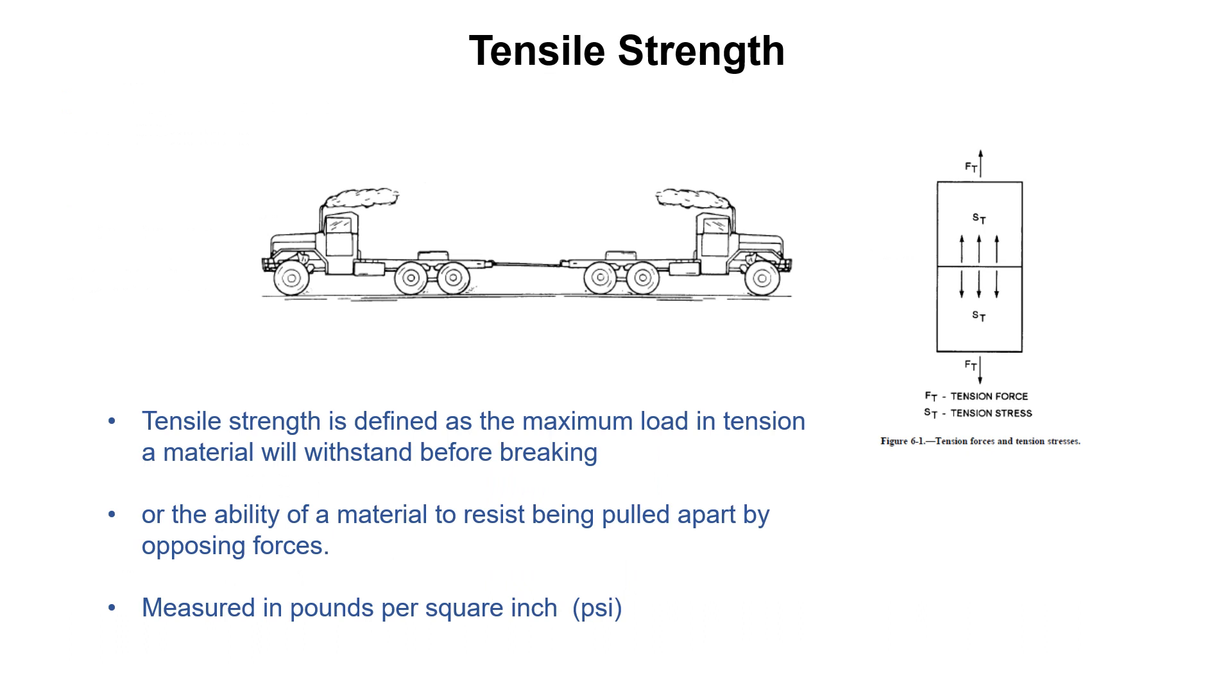Tensile strength. We got a little picture of two semi trucks pulling on each other with a sample in between them. Tensile strength is defined as the maximum load in tension that you can put on something before it fails. How much you can pull it apart. It's also the ability of a material to resist being torn apart by opposing forces. It's measured in pounds per square inch.